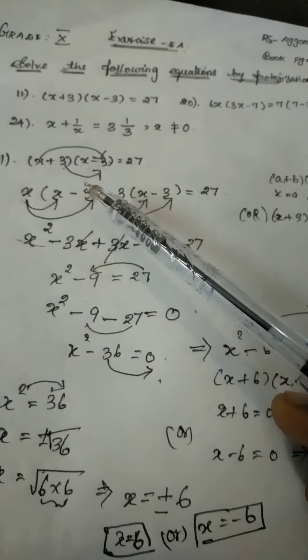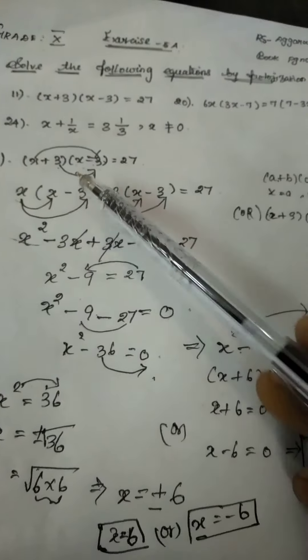So we have x is equal to 6 and x is equal to minus 6, it is the answer. So this is the way how to solve the problem.